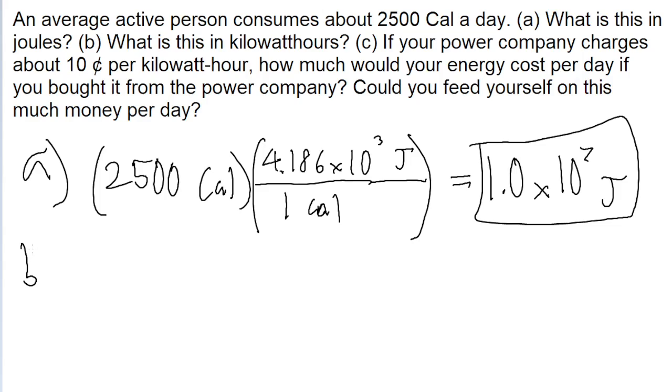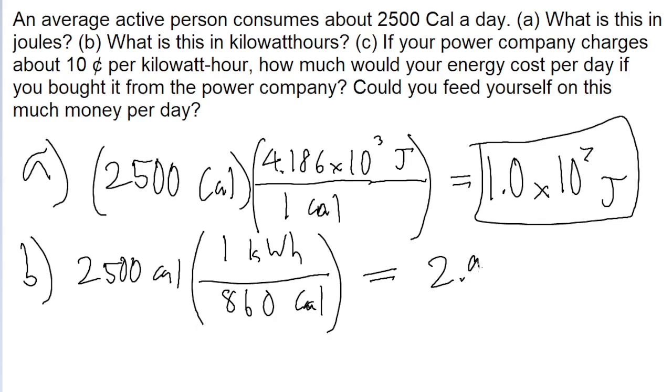Now part B asks, what is this in kilowatt hours? Once again, we just need to know a conversion factor for this. 2,500 calories. So 1 kilowatt hour is equal to about 860 calories. That's the conversion factor we'll use for this part of the problem. So take 2,500 calories and divide it by 860, and we get 2.9 kilowatt hours.